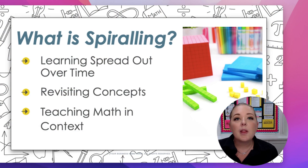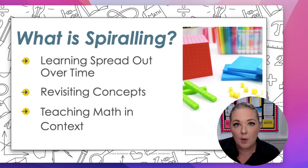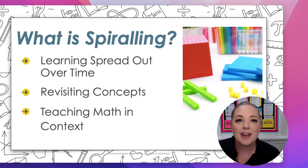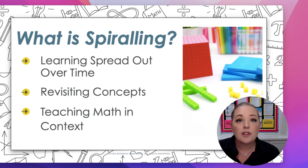So let's dig right in. What exactly is spiraling? Spiraling in your math classroom is all about learning being spread out over time. Instead of following traditionally laid out textbooks where we cover all the concepts of one strand all at once and then drop it and move on to the next unit — just working through textbook units as they're structured — that's a traditional approach. That is definitely not spiraling. Spiraling means we are revisiting those concepts over and over time.